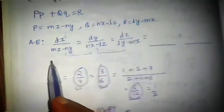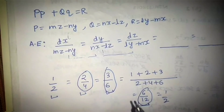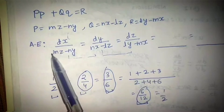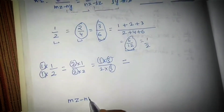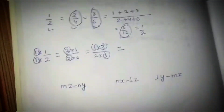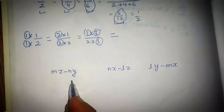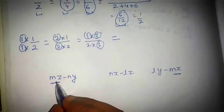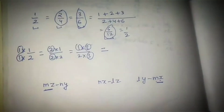Now let's come back to our question. We have these three fractions. We have to choose such values of multipliers so that the denominators, after multiplication, sum to zero. Right now we have: mz minus ny, nx minus lz, and ly minus mx. How can we make their sum zero? Adding all three won't work because the terms are distinct. But notice: we have mz here and mx here. If I multiply the first by x, I get mxz; if I multiply the third by z, I also get mzx — can you spot the pattern?